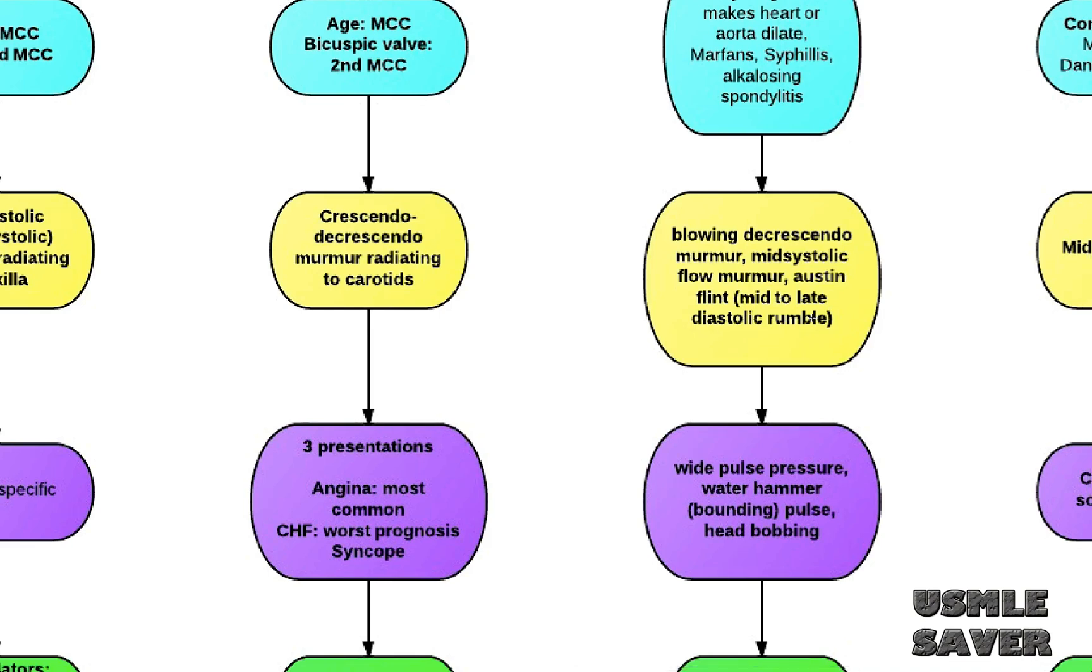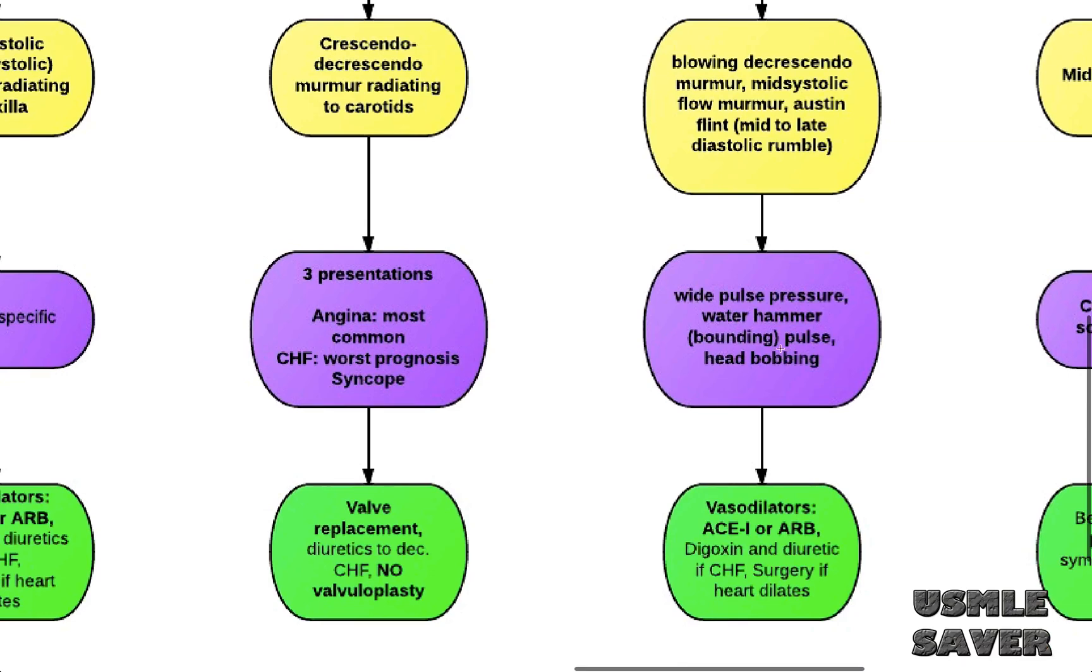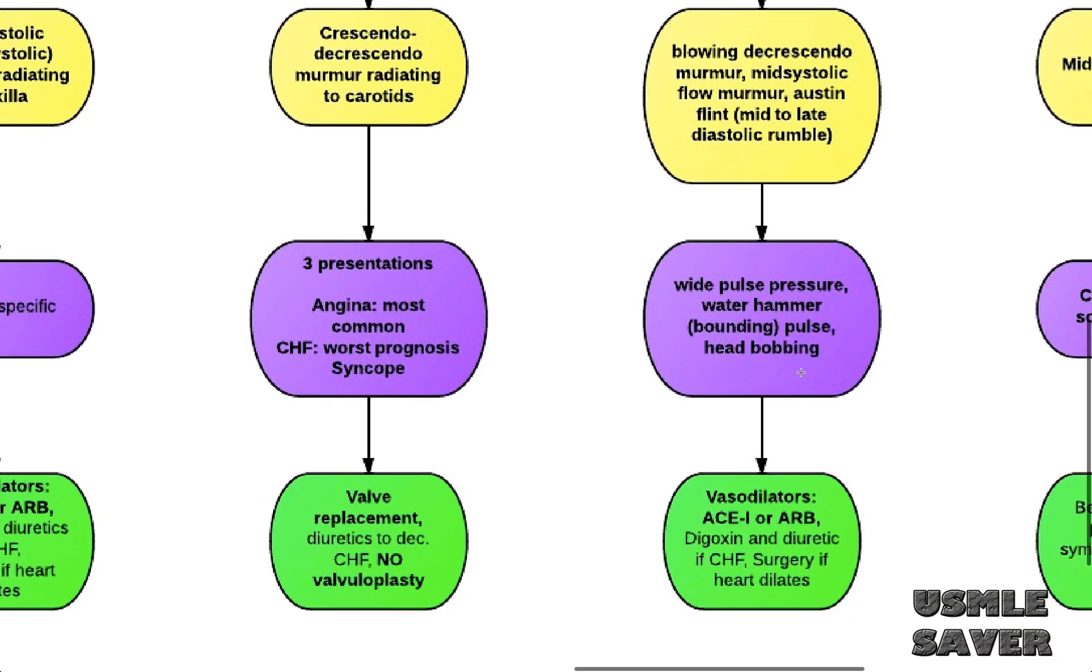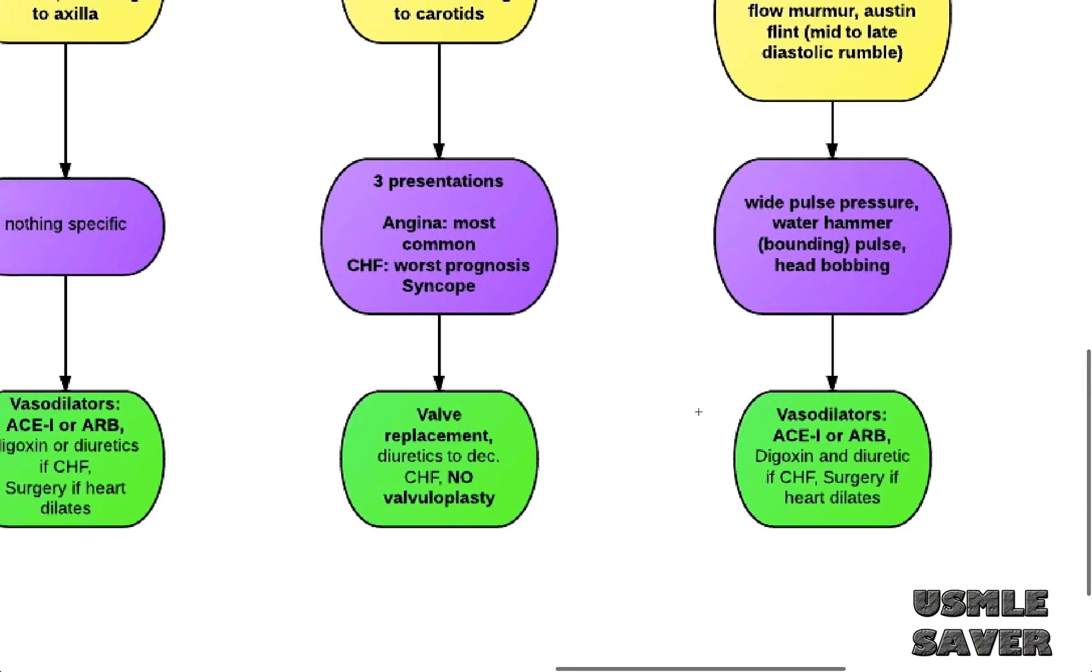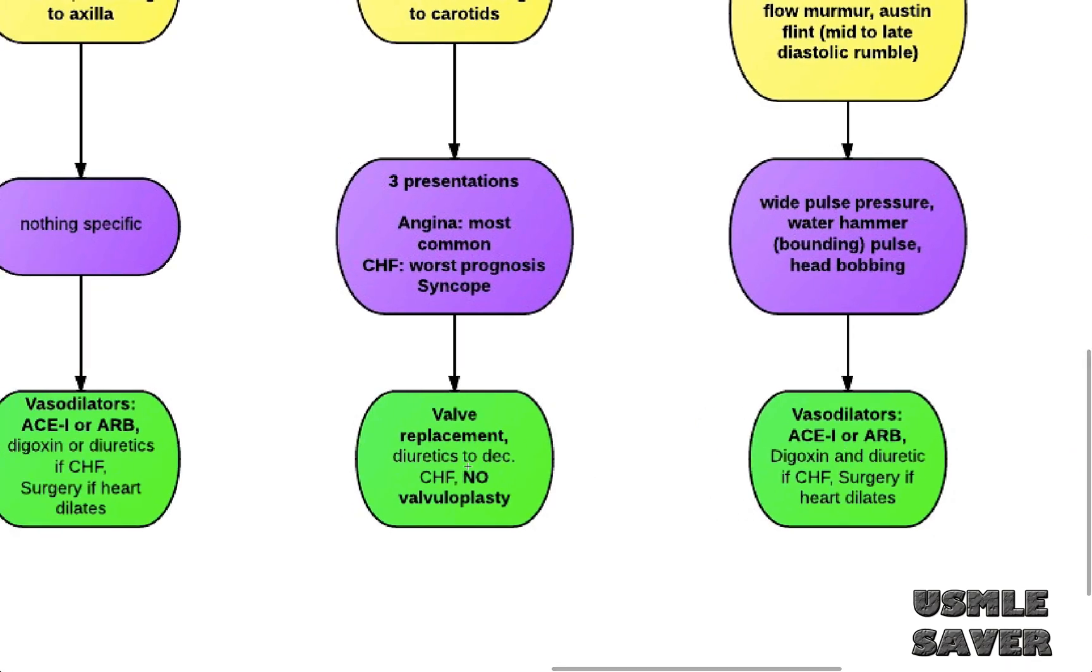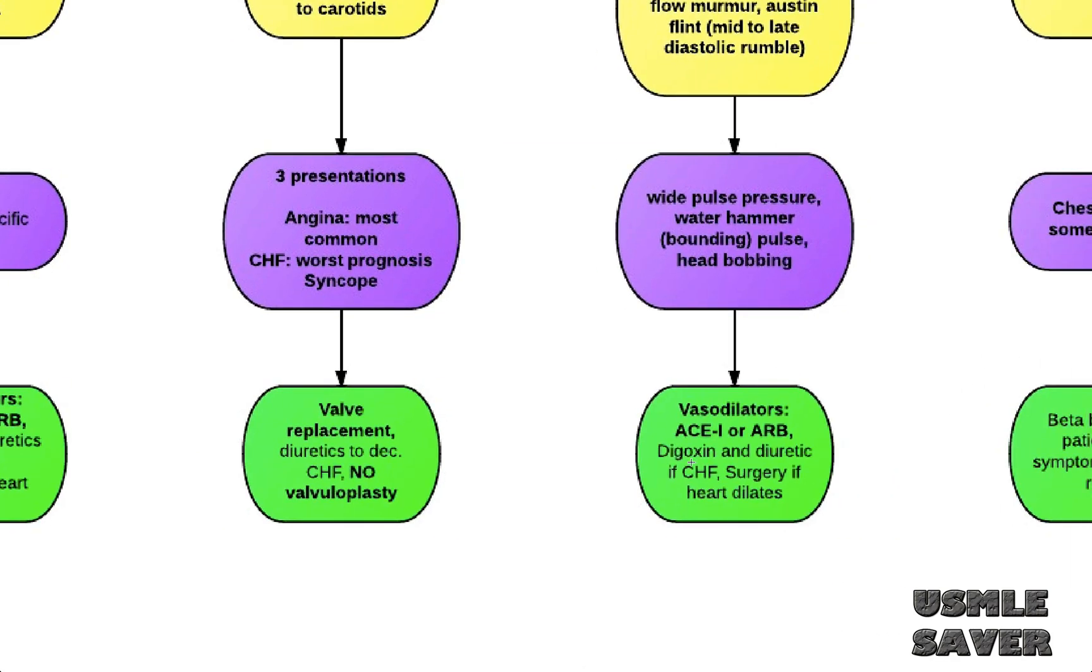With aortic regurgitation, patient might have blowing decrescendo murmur, mid-systolic flow murmur, or Austin-Flint murmur, which is mid or late diastolic rumble. Don't remember names of murmurs like Austin-Flint murmur, but make sure you can identify these murmurs by description. These patients also have wide pulse pressure, water hammer pulse, and head bobbing symptoms. Management is similar to mitral regurgitation, so you prescribe patients with vasodilator like ACE inhibitor, or ARB. Use digoxin or diuretic if patients have CHF symptoms and surgery before heart starts to dilate. So this is it for aortic regurgitation.